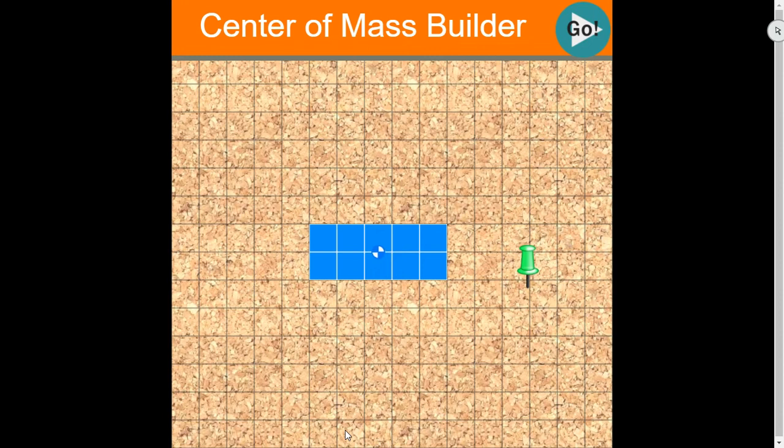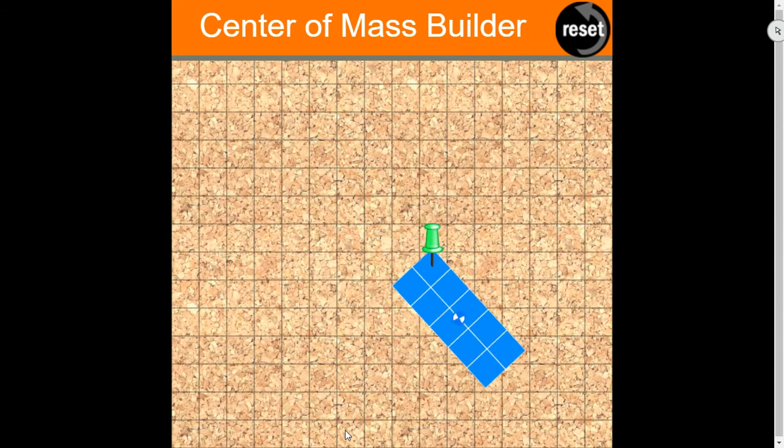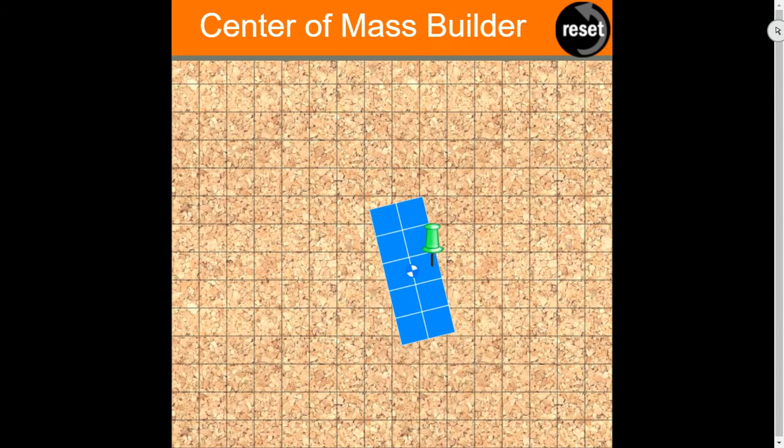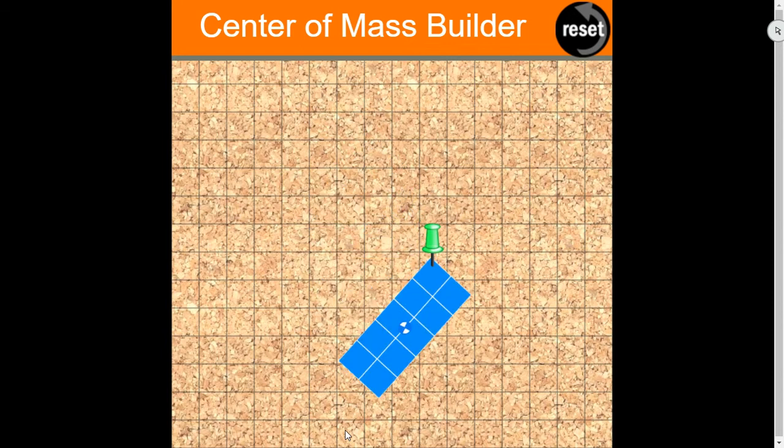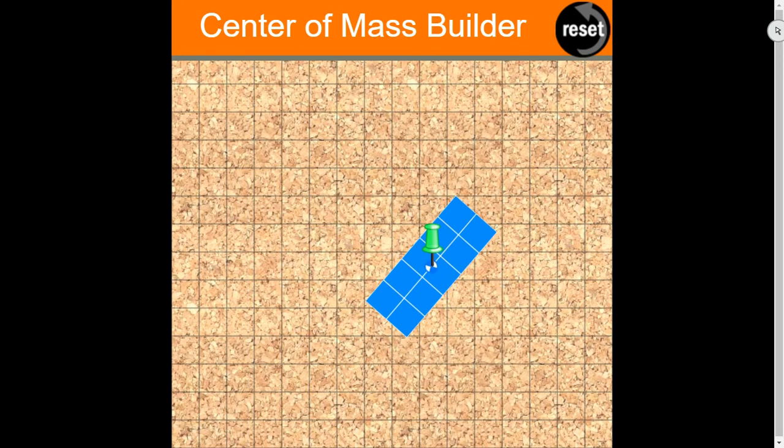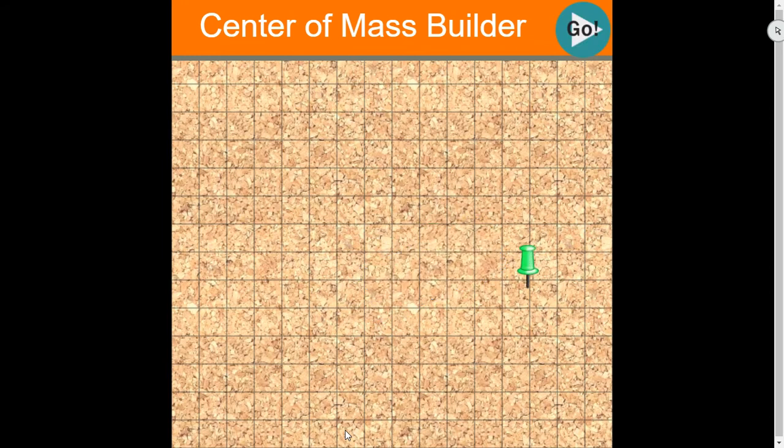So if we had our solid board here, our center of mass would be in the center. And if I were to put a pivot point somewhere, it would rotate around this pivot wherever I put that. If I'm really good, put that right at the center of mass there and kind of balance it out.